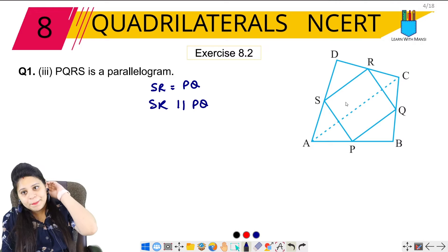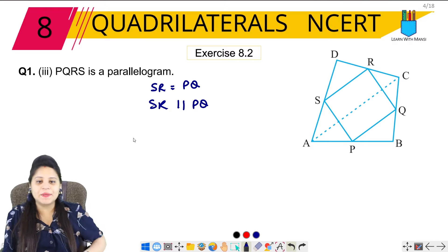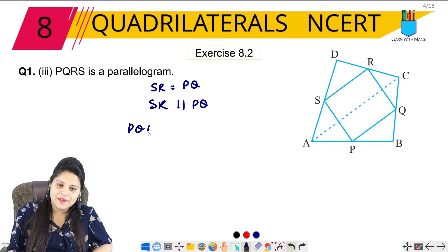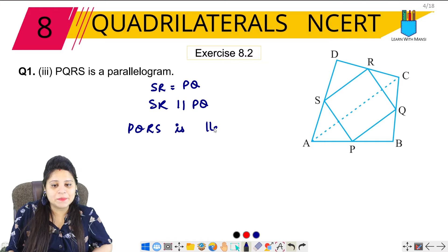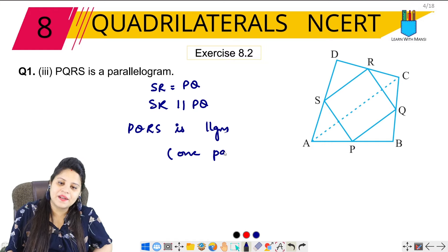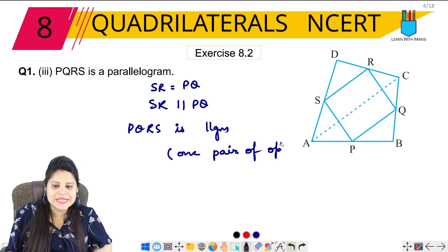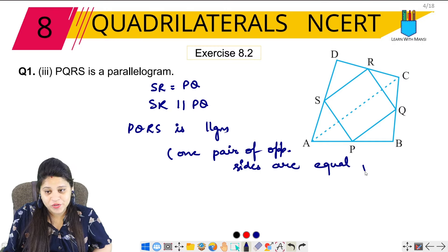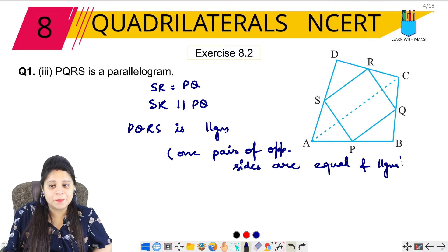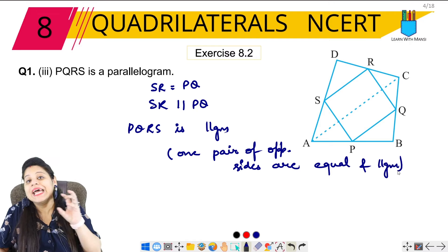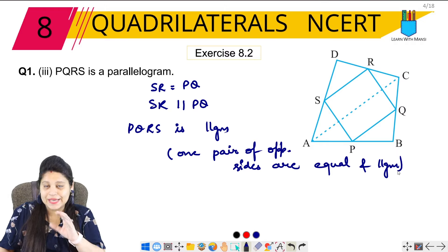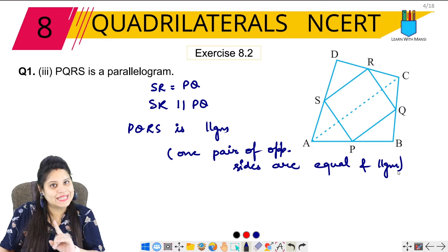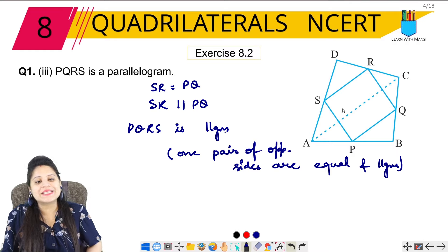If SR equals PQ and SR is parallel to PQ, then PQRS is a parallelogram. Because one pair of opposite sides are equal and parallel. If we can prove that one pair of opposite sides are equal and parallel, it is a parallelogram. So PQRS is a parallelogram.